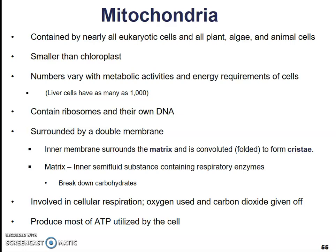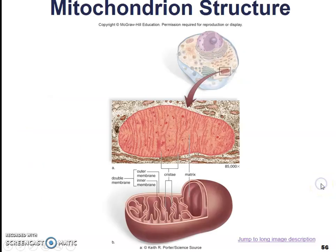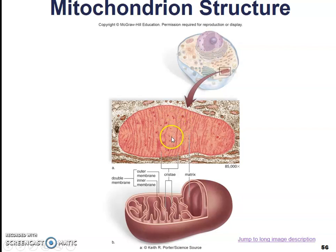In cellular respiration, oxygen is used to break down the glucose molecule and the cell gives off carbon dioxide. The process makes adenosine triphosphate, or ATP, which the cell uses like batteries. Here we have a mitochondrion — the singular form of mitochondria — as an image obtained using an electron microscope. You can see the folded membrane inside, known as the cristae. The open area is the matrix, which is filled with a semi-fluid similar to that of cytoplasm.